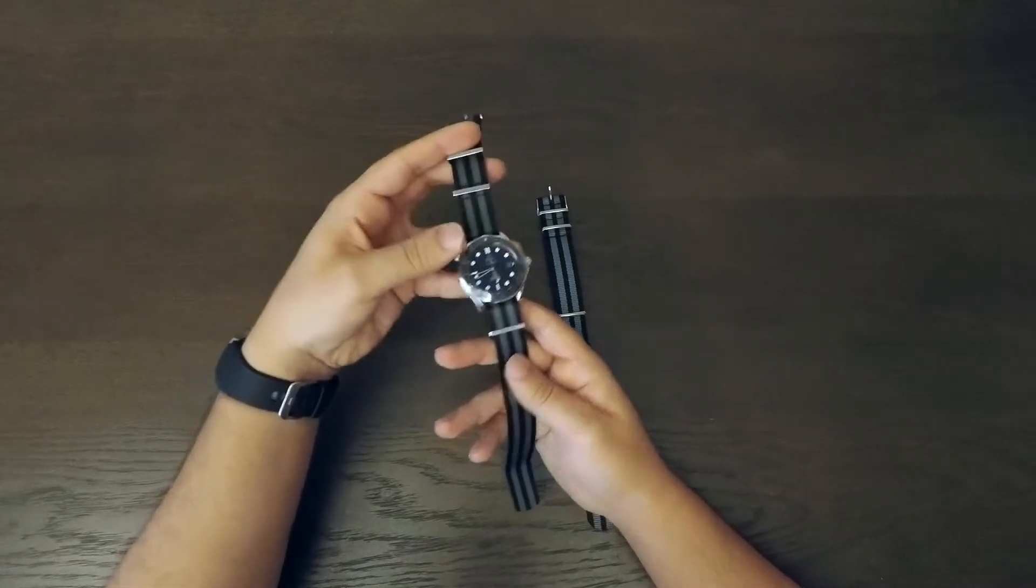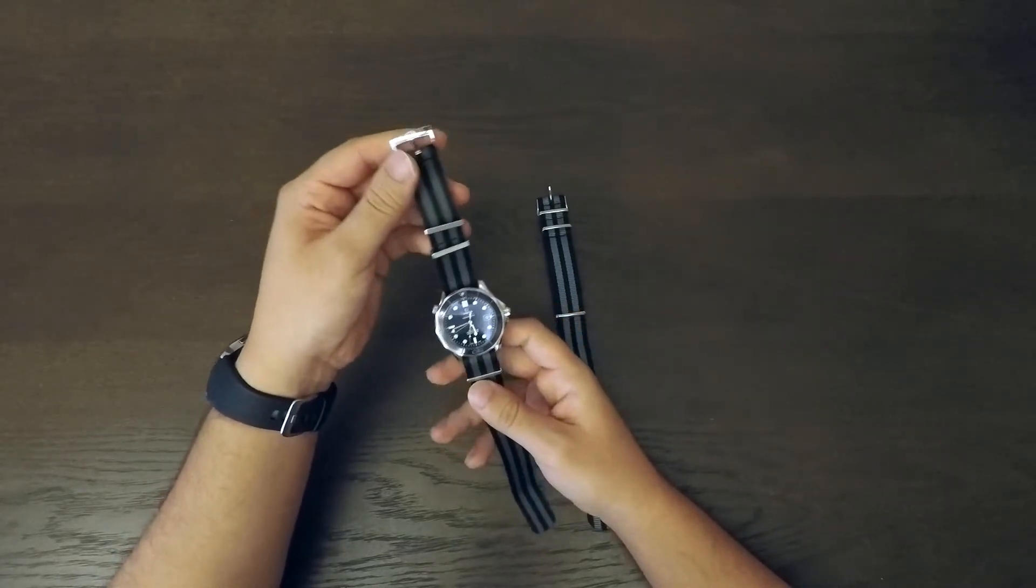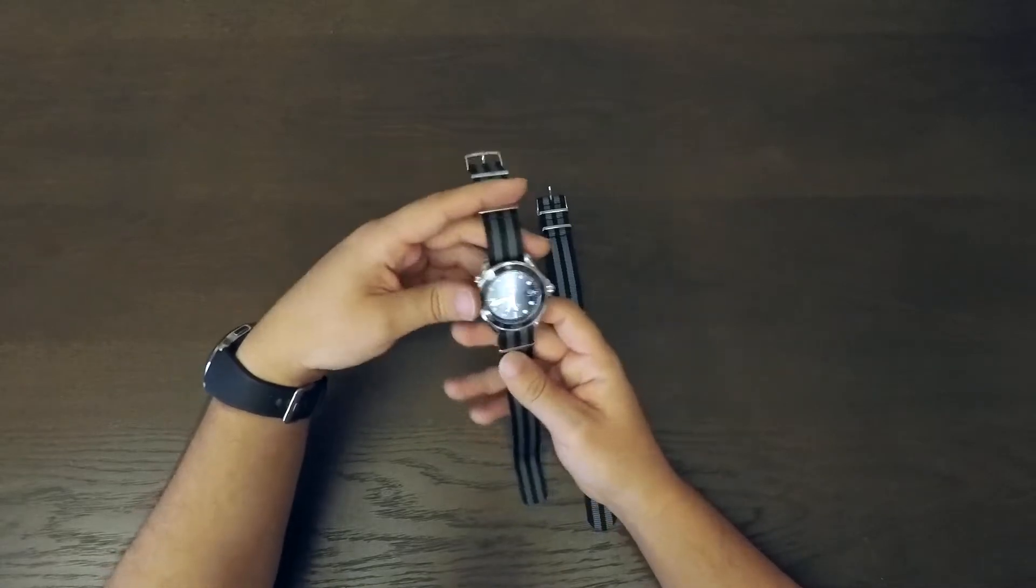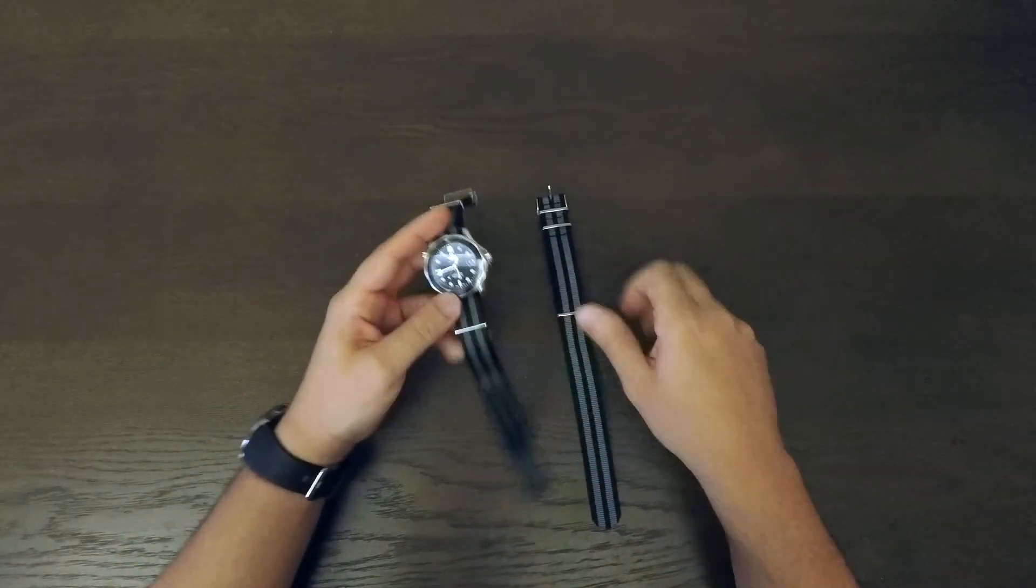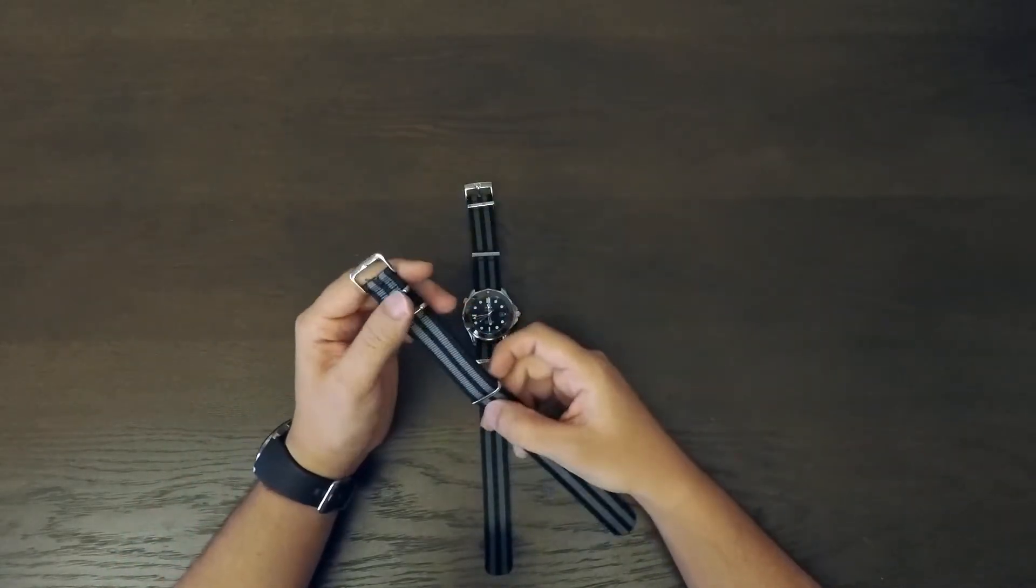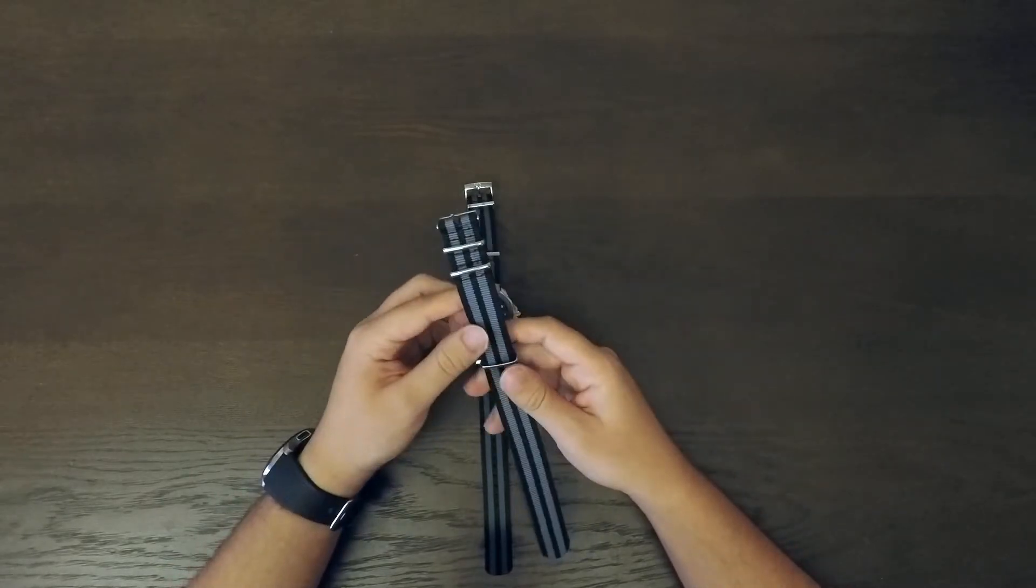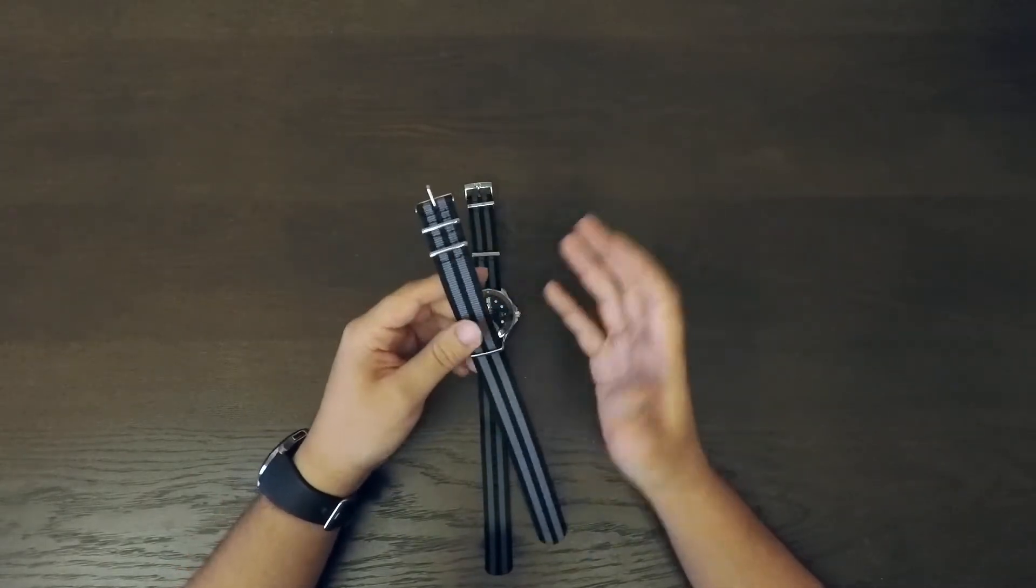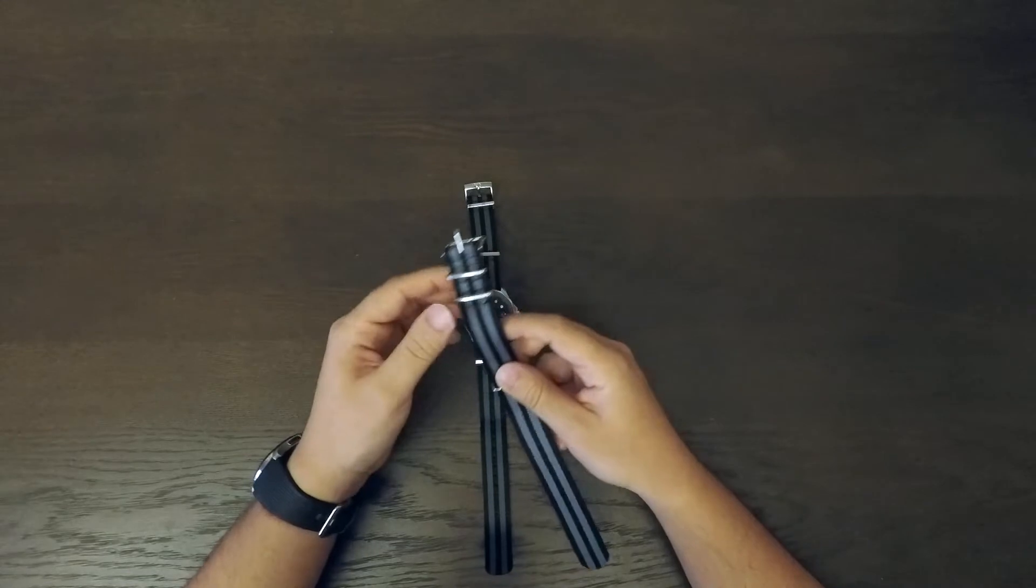And I think that this color NATO is probably the best one because it is the original Bond NATO and suits the blue color as well. So what I've got here is just a standard generic one, which is probably about $15 or something, and I just got this so people can see the differences between the two.